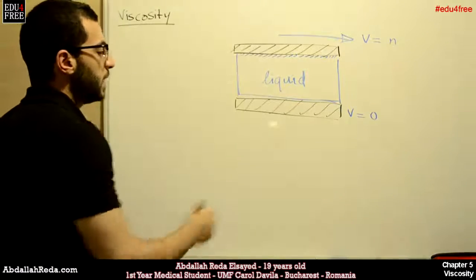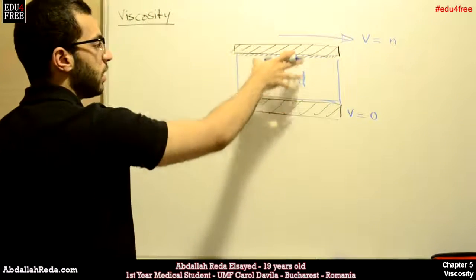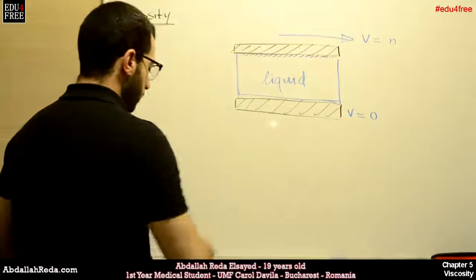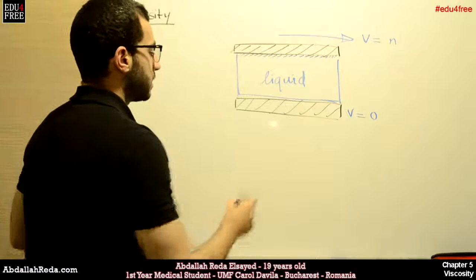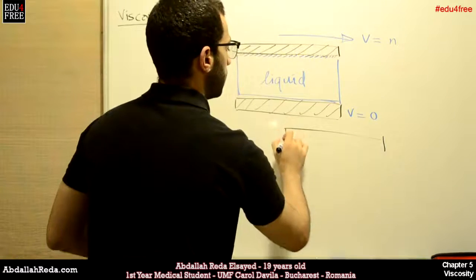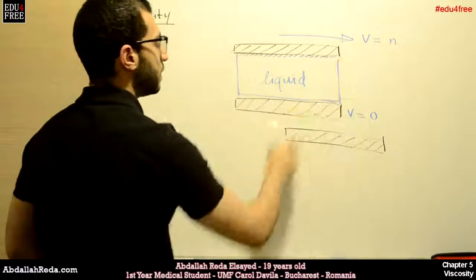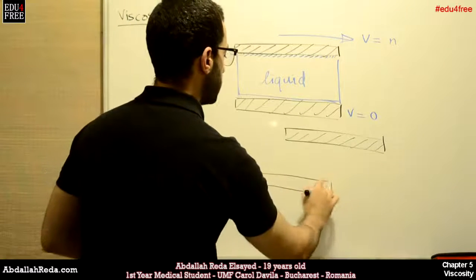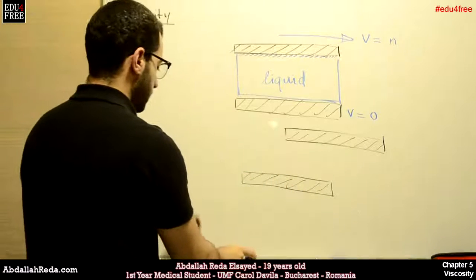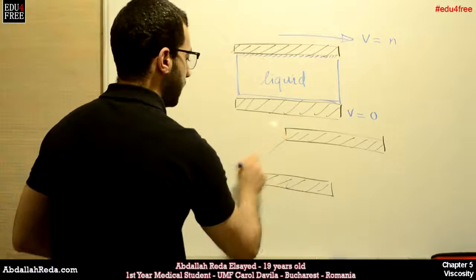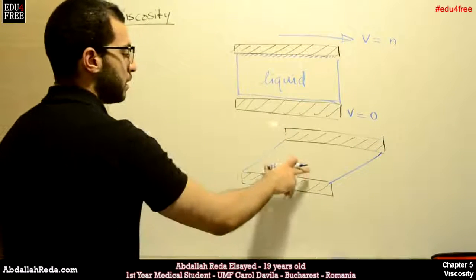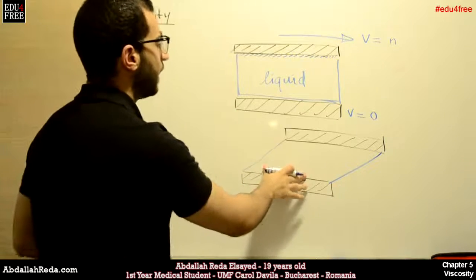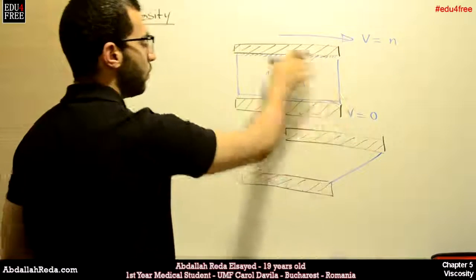We therefore have a gradient of velocities ranging from maximum to zero. If we suppose that the upper layer moved a certain distance while the other one remains static, at some point in time the layers very close to the static layer remain intact, while the others moved due to the movement of the upper layer.